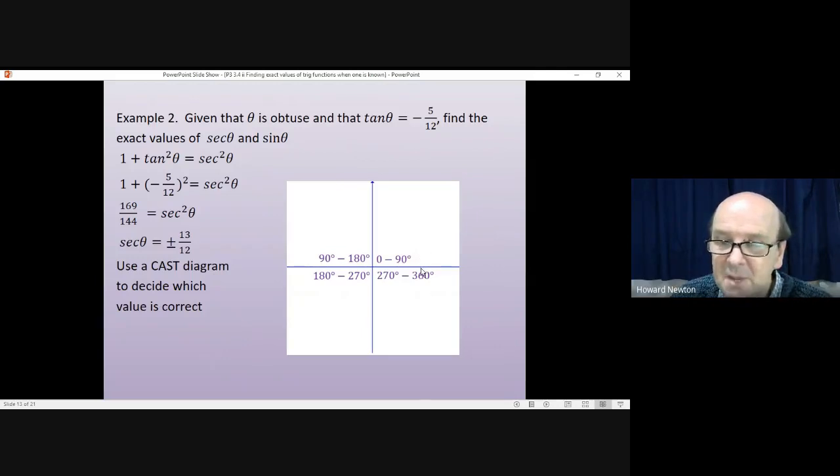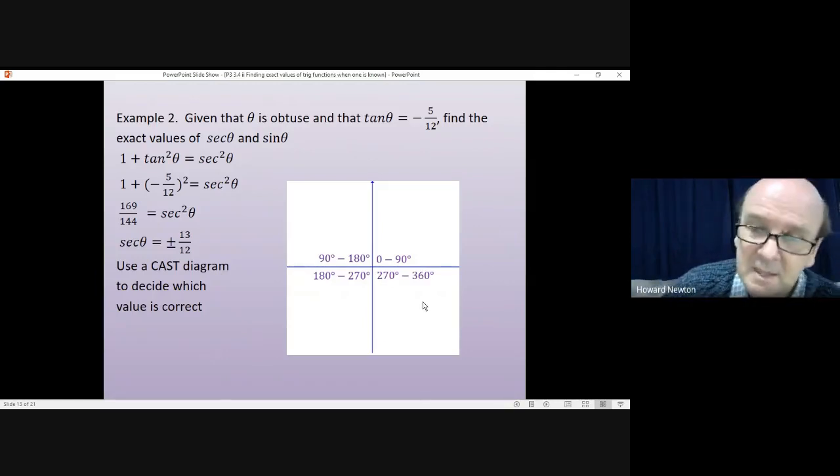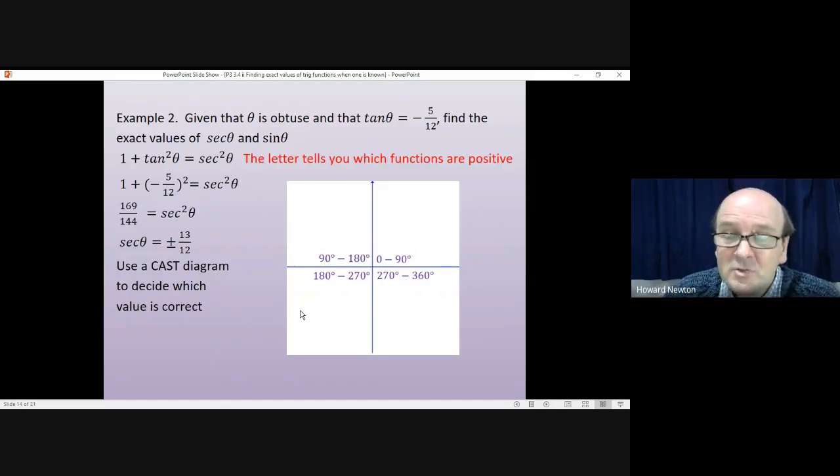So, that's the first thing. Angles are measured from the x-axis, the positive x-axis, going anticlockwise. Now, the second thing is which trig function is positive in each of these quadrants. So, for example, between 0 and 90 degrees, which trig functions are positive? Is tan positive? Is sine positive? Is cosine positive? And the answer to that is all of them are. All of them. And the letter A there stands for all the trig functions. They are all positive between 0 and 90 degrees.